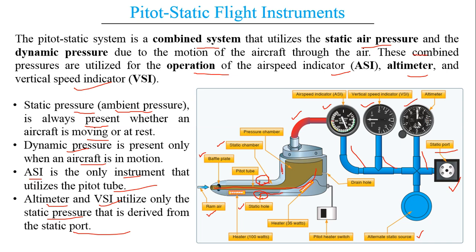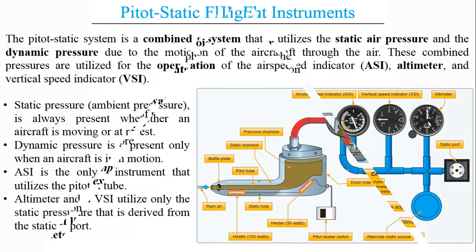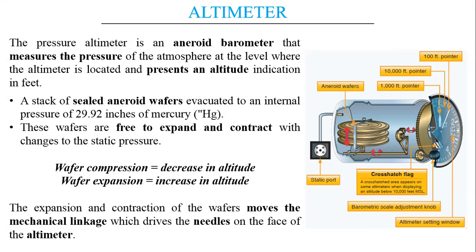The first system we will learn about is the altimeter. As the name suggests, altimeter has to do with altitude — 'alt' for altitude and 'meter' for instrument. The pressure altimeter is an aneroid barometer that measures the pressure of the atmosphere at the level where the altimeter is located and presents an altitude indication in feet. Basically this altimeter is an instrument which reads atmospheric pressure and provides us the altitude.